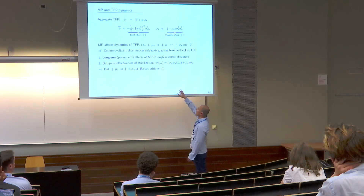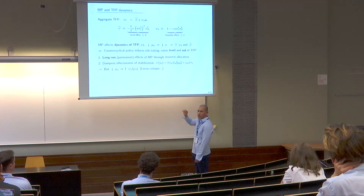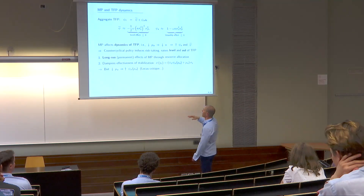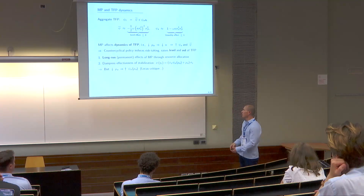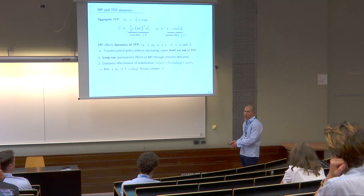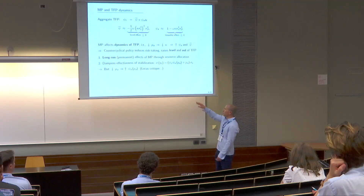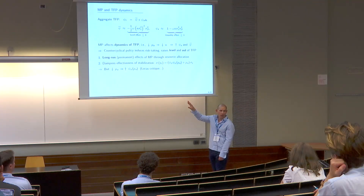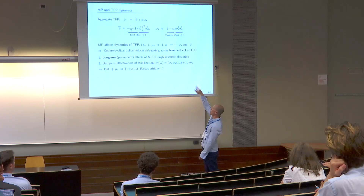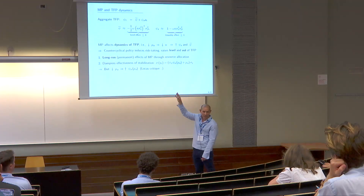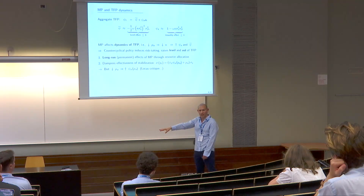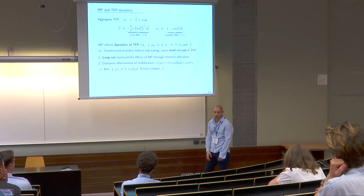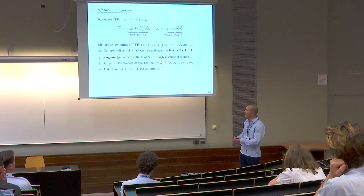The second interesting implication: reallocation opportunities actually dampen the effectiveness of stabilization policies. The standard deviation of output depends on the standard deviation of TFP and the output gap. In the standard model, the first term is exogenous. In this model, if I start to reduce mu A, psi A increases — TFP itself becomes more volatile as the central bank tries to stabilize output. So for the central bank to achieve a certain degree of output stabilization, it has to pursue even more aggressive policy.